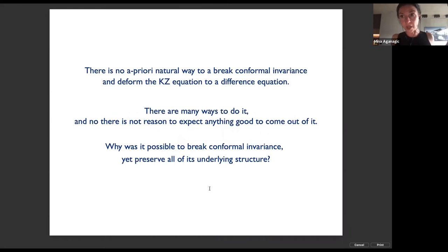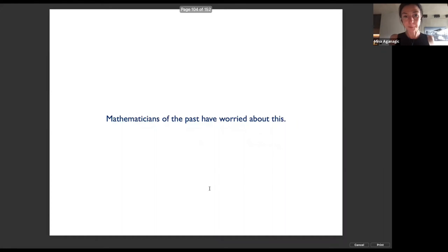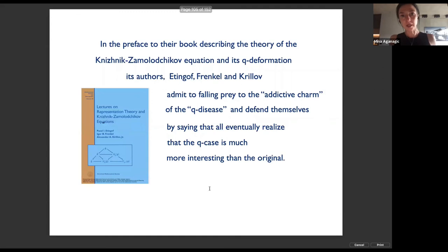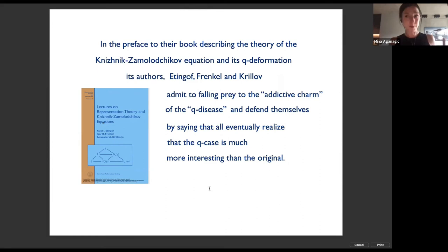The reason this story is remarkable is that a priori it had no right to exist. There's no natural way of breaking conformal invariance to deform the KZ equation to some other equation — there are many different ways you could go about it and absolutely no reason to expect anything good to come of it. Why should you be able to break conformal invariance while preserving all the structure inside? Mathematicians have worried about this, and there's a beautiful book by Igor Frenkel and Kirillov on the KZ equation and its q-deformation, where in the preface they admit to falling prey to the addictive charm of the q-disease and defend themselves by saying everyone will eventually realize the q-case is in fact much more interesting than the original.